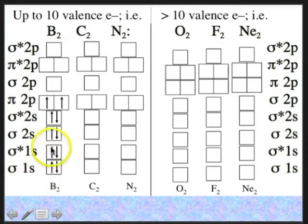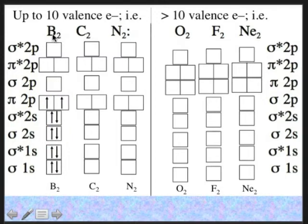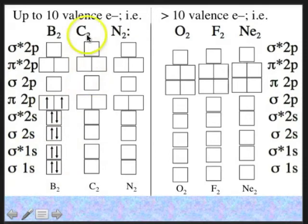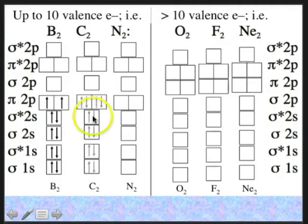Counting the 10 electrons for B2 — boron is element 5, two of them gives 10 electrons total — we fill the MO diagram accordingly. For dicarbon C2, carbon is element 6; two of them gives 12 electrons total, which we fill into the MO diagram.